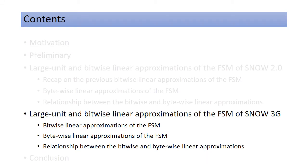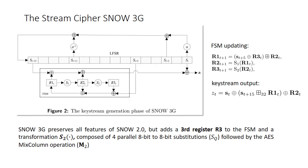Next, we describe the bytewise and bitwise linear approximations of the FSM of SNOW 3G. SNOW 3G differs from SNOW 2 by introducing a third 32-bit register to the FSM and a corresponding transformation for updating this register, the S2 function. The FSM updating and the keystream output are as shown here. The S2 function is a 32-to-32 mapping, composed of four parallel 8-bit to 8-bit substitutions, followed by the AES MixColumns operation.